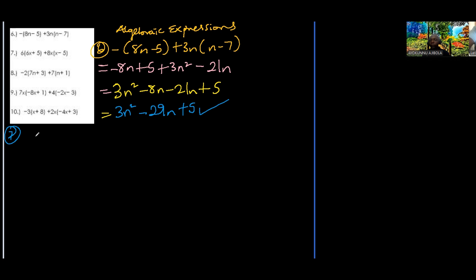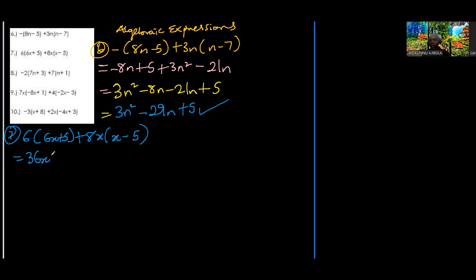Number 7: 6 into 6x plus 5, plus 8x into x minus 5. So 6 times 6 is 36 with an x, and 6 times 5 is 30. Then 8x times x is 8x squared, and 8x times negative 5 is minus 40x.